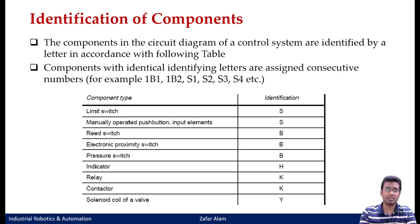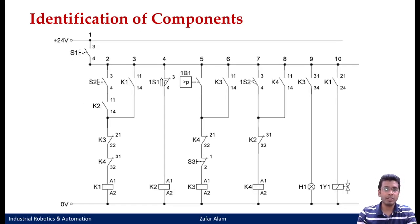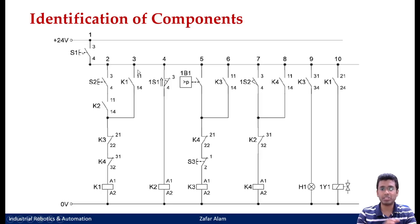These are the different identifying letters and numerical values given to identify different types of components in electrical circuit diagrams. If you see this typical circuit — don't go into detail right now about how it works, just try to identify the components. I can see my detentive switch or control switch, which is denoted by S1. I have another push button here, S2.